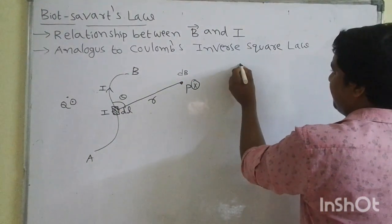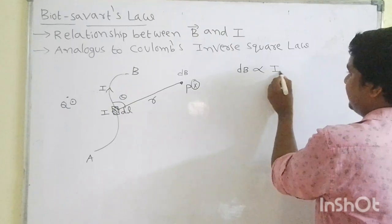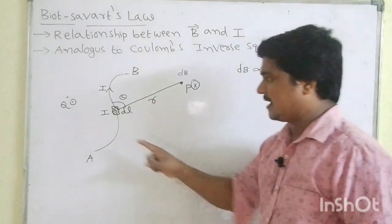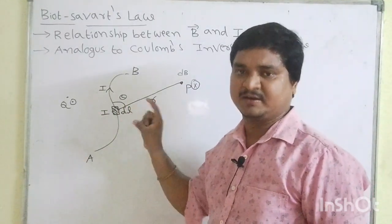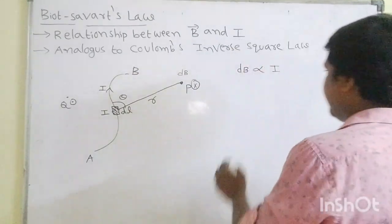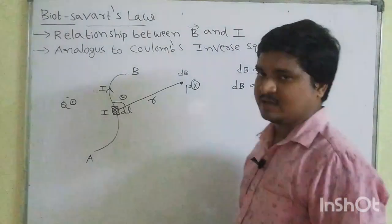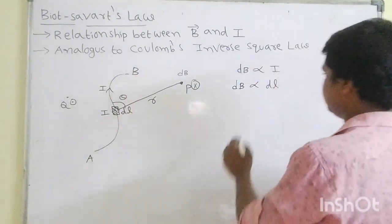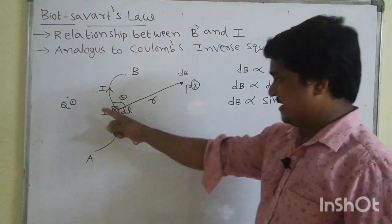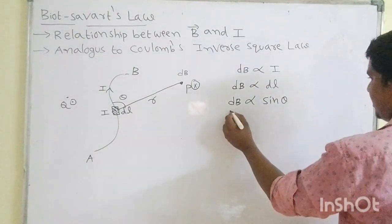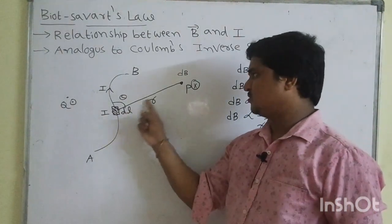From this, we can write the magnetic field induction at P point dB as directly proportional to the current element. As current through the conductor increases, the magnetic field around the conductor also increases. Magnetic field is also directly proportional to length DL, and proportional to sin theta — the sine of the angle between IDL and r.